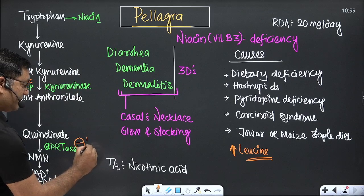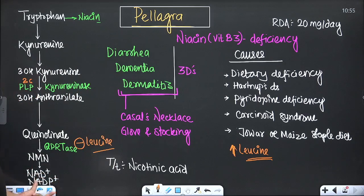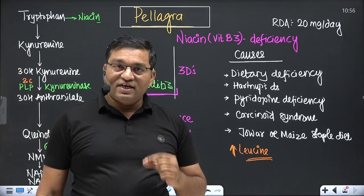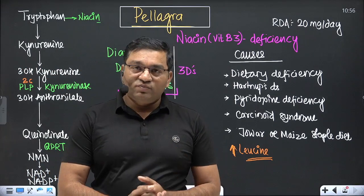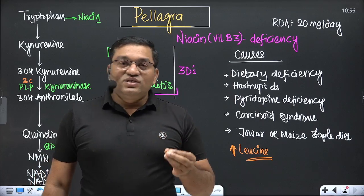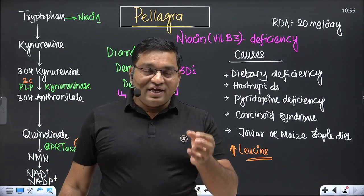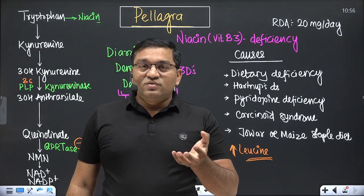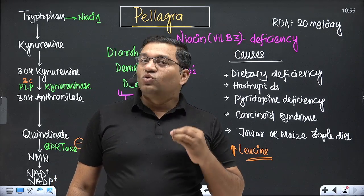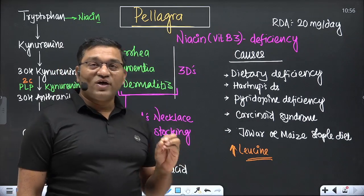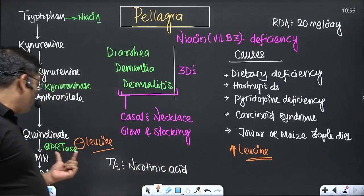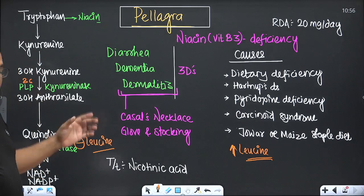The active forms of niacin are NAD and NADP, which are required for a number of biochemical reactions — for example, dehydrogenase reactions such as glycerol-3-phosphate dehydrogenase, pyruvate dehydrogenase, alpha-ketoglutarate dehydrogenase, isocitrate dehydrogenase, and beta-acyl-CoA dehydrogenase. NADP is required for reactions like the HMP shunt — glucose-6-phosphate dehydrogenase and phosphogluconate dehydrogenase. That is why niacin is very important.